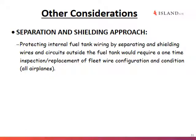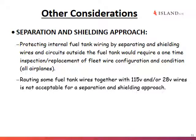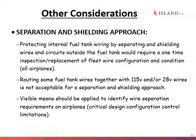Let's consider how an inspection can prove an aircraft is safe and what to look for. With the separation and shielding approach, we need to make sure wires are protected — especially those internal to the fuel tank, which need to be separated and shielded from high-voltage circuits outside. In some cases, AC 115-volt and DC 28-volt wires were found routed together, which is not acceptable. AC and DC wires must be routed separately, and there needs to be a visible means to identify wire separation.